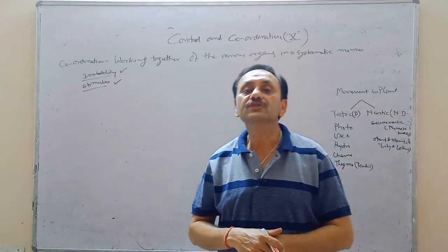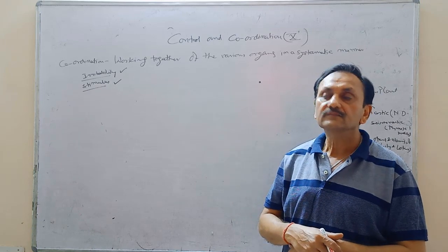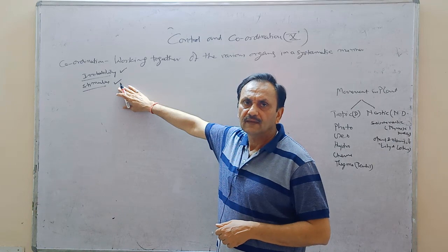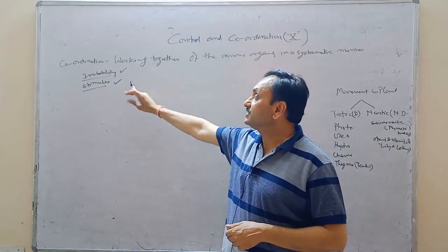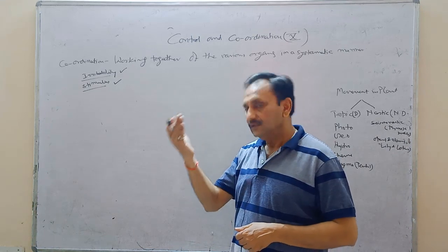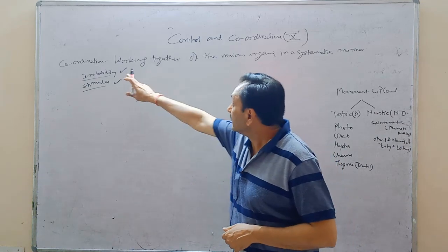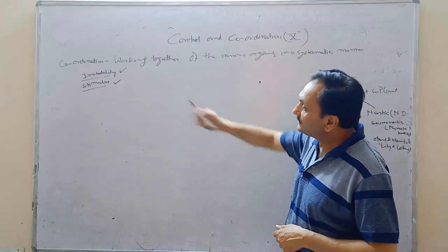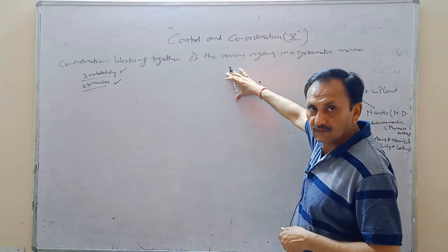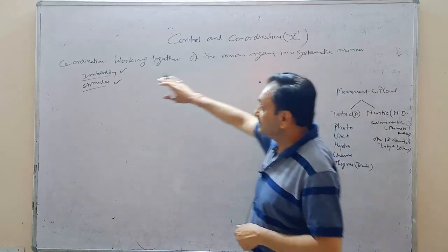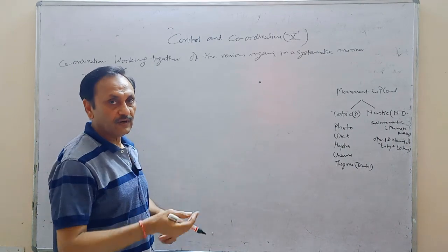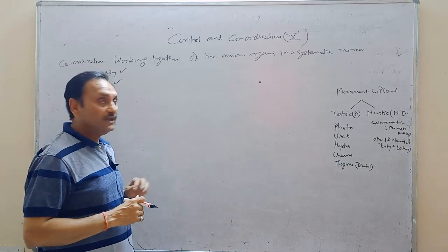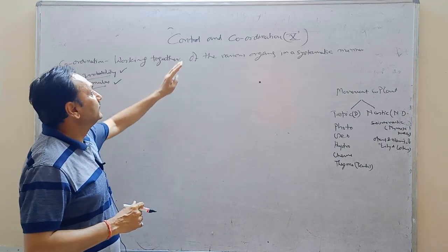Stimulus may be in the form of a physical factor or a chemical factor — that may be in the form of heat, light, or certain chemicals. That is called stimulus. When a part is sensitive to that stimulus, it performs certain actions. The organs which become sensitive to the stimulus will perform different functions, and if they are in a systematic manner, then we can say that it is coordinated. So this irritability and sensitivity to the stimulus are essential factors for the control and coordination.